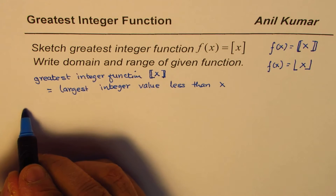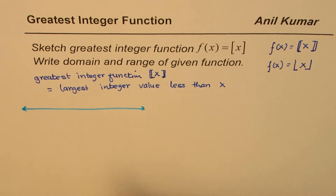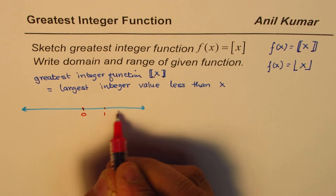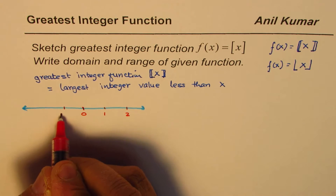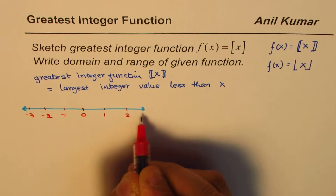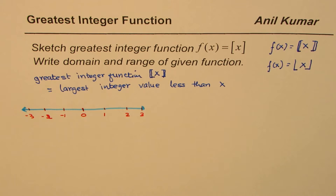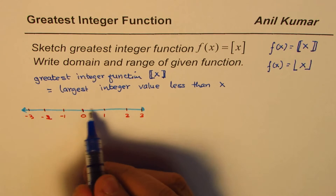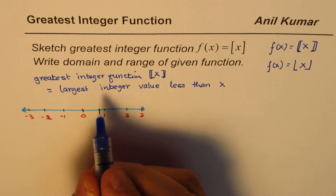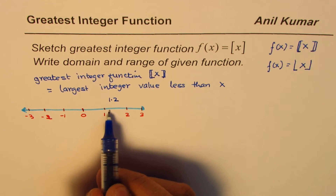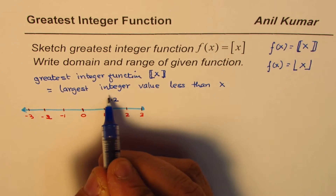Let's take a number line and then discuss this further. On the number line we have the numbers: minus 3, minus 2, minus 1, 0, 1, 2, 3. Now anything to the left is less. So if I have a number — let's say 1.2 — it is located here on the number line.